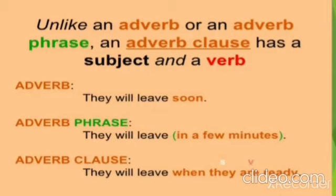Unlike an adverb or adverb phrase, there is a difference: an adverb clause has a subject and a verb, whereas a phrase does not. For example — adverb: 'They will leave soon.' Soon is the adverb. Adverb phrase: 'They will leave in a few minutes.' In a few minutes is an adverb phrase. Adverb clause: 'They will leave when they are ready.' When is the adverb, and 'when they are ready' is the whole adverb clause.